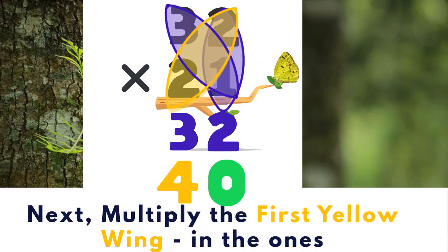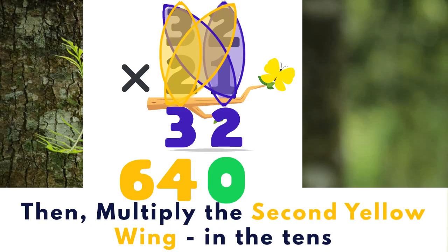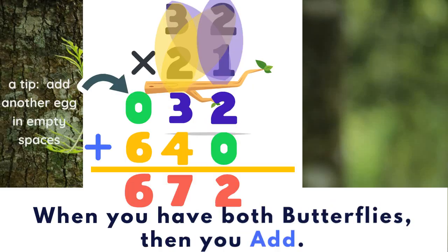Next, multiply the first yellow wing in the ones — two times two equals four. Then, multiply the second yellow wing in the tens: three times two equals six. Go ahead and write six. When you have both butterflies, then you add. Don't forget the tip — add another egg in empty spaces.